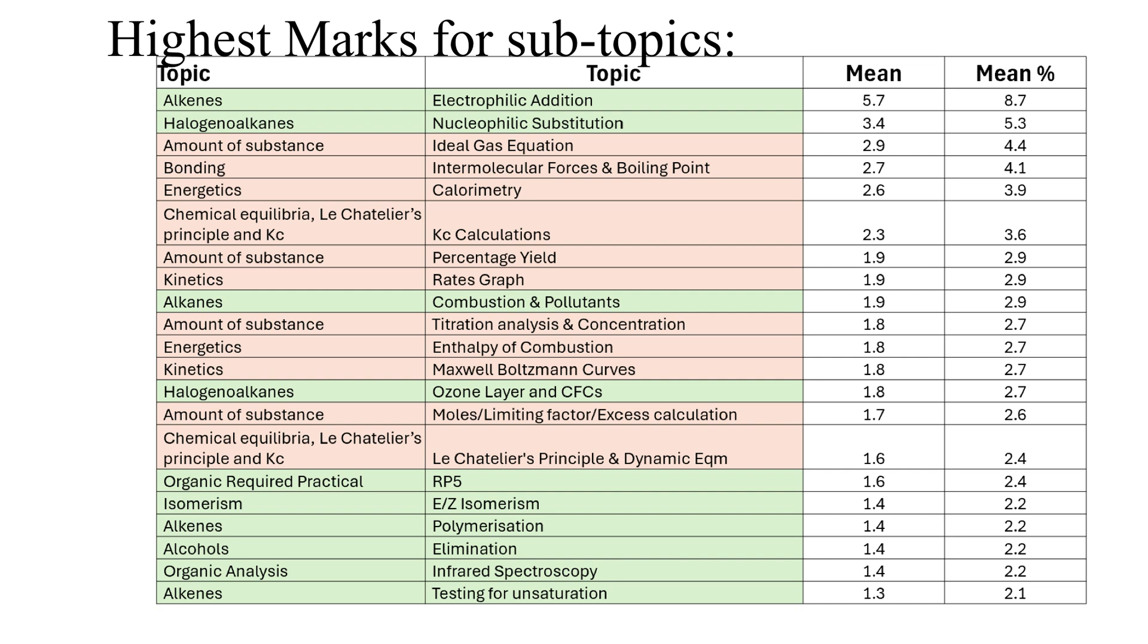We can split up AS Chemistry paper 2's topics into 60 subtopics where each topic is made up of many parts. When we do that we can see that some subtopics are assessed with more marks than others.